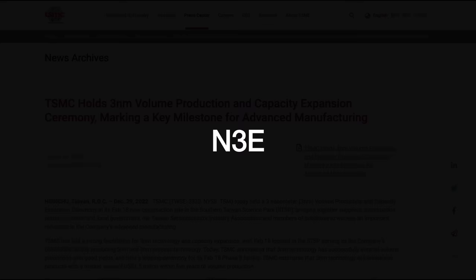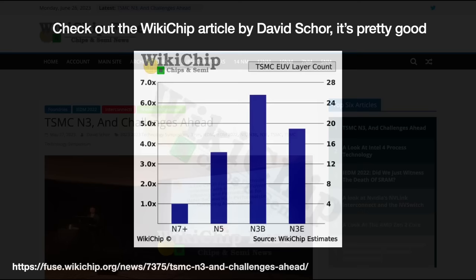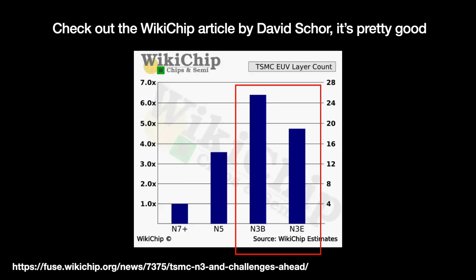Then we have this second process called N3E. It is entirely different and is known as the Real N3. This one is heading into high volume production later in 2023. One of the significant differences between N3B and N3E is the number of layers done by EUV. David Shore of Wikichip Fuse estimated that N3B has 80% more EUV layers than the N5-N4 Process Nodes. N3E apparently scaled that back, going from 25 EUV exposures to 19.